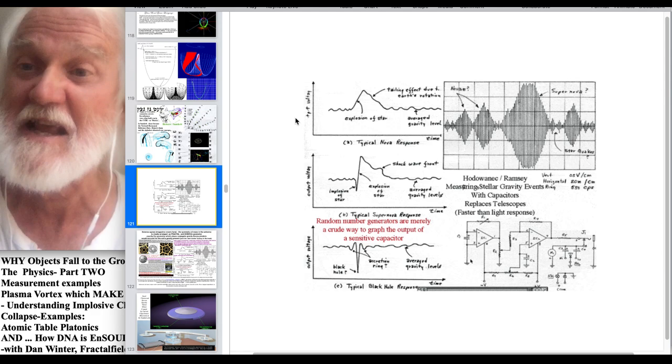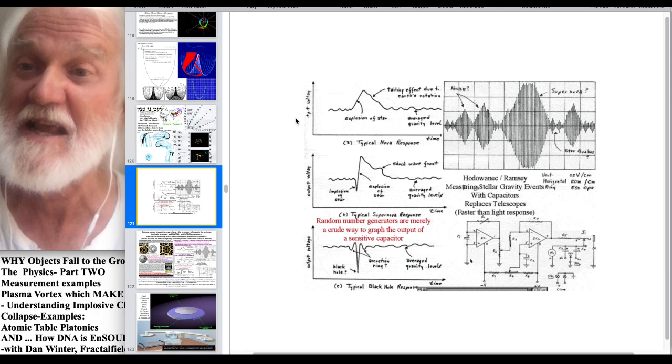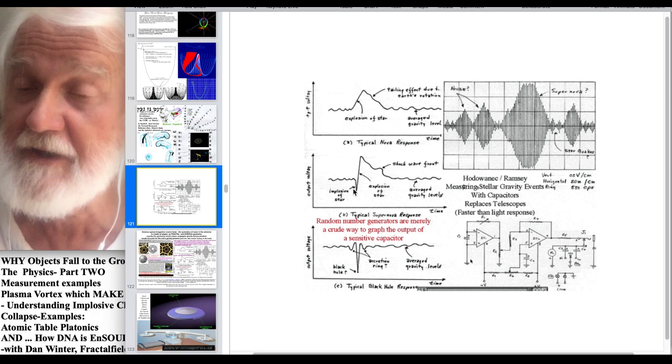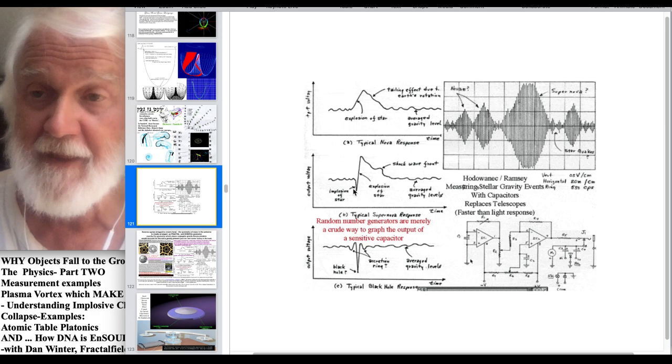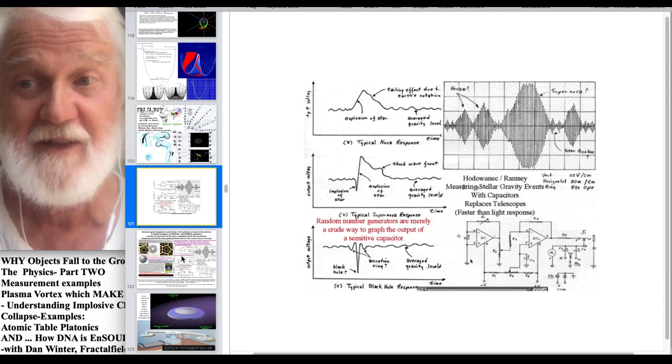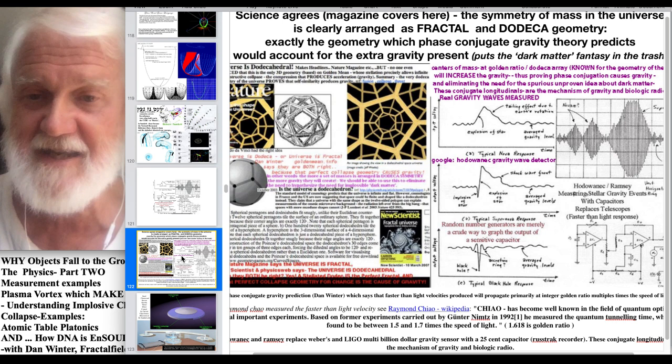Once you know those gravity waves are longitudinal interferometry. In this case, the measurement here is of the time of arrival of a known star explosion, arriving here faster than light at Earth and measured in this, it was called a rust track recorder. It's a capacitive coupling that measures the passage of the longitudinal field, sometimes called a gravity wave. And it's a very good example of a gravity wave detector based on a 25 cent capacitor instead of a billion dollar LIGO detector. Once you know why objects fall to the ground, you can do some things that are actually fun.